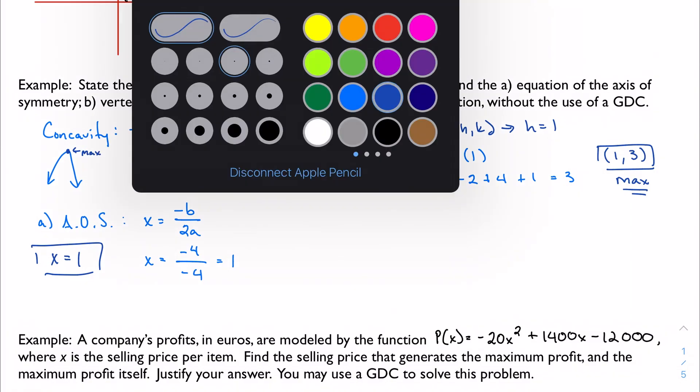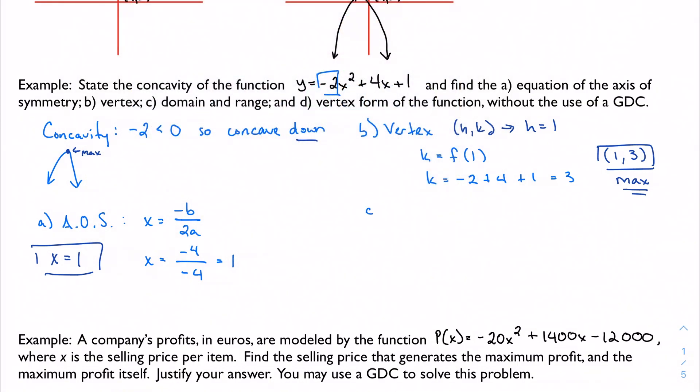Okay, well, domain is easy enough because this is a polynomial function. So there's nothing that I can plug in that would give me some kind of an undesirable or impossible result. I'm not dividing by zero or anything. So the set of real numbers is my domain for any polynomial function, and that is true here.